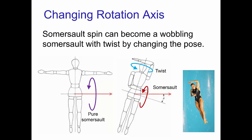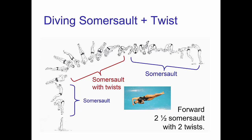And this transition is reversible. For example, the character may start with a pure somersault and then add a twisting rotation by moving the arms, and then return to a pure somersault by returning to their original pose.